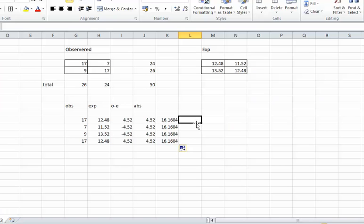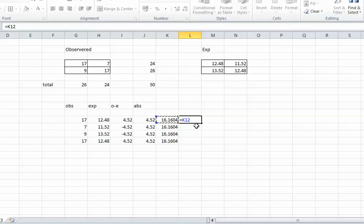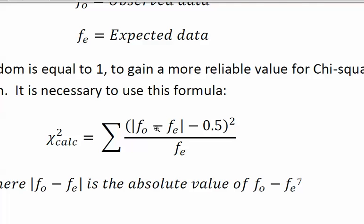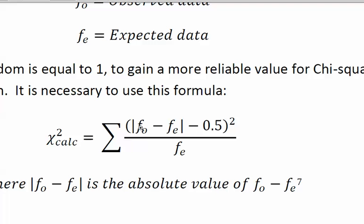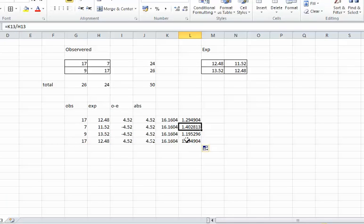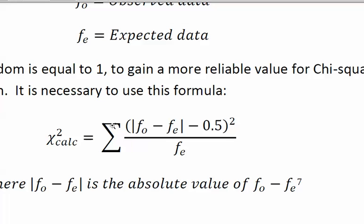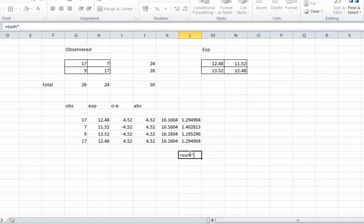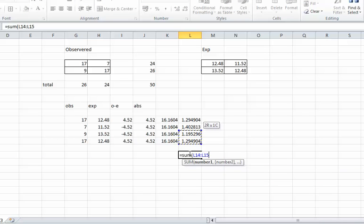You want to divide that by FE, so you want to take that number, divide it by the expected, and then scroll to the bottom, make sure it does it for each row. Basically, by scrolling to the bottom, you're doing this calculation for each row, and then what you want to do is do the sigma bit now, which is to total that. So add them all up, sum, select that column, and then this number here is your chi-squared, that's it.